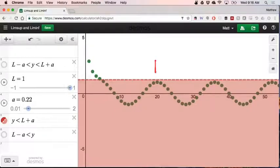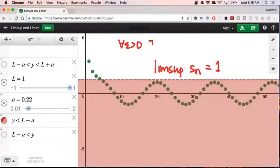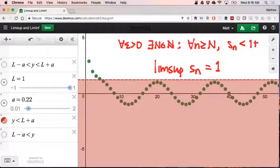But now I've changed the sequence compared to the one we looked at on Monday. So lim sup of Sn is equal to 1. Because, and the definition was, for all epsilon greater than 0, there exists an N, natural number, such that for all little n's that are greater than or equal to big N, we have that Sn is less than 1 plus epsilon.